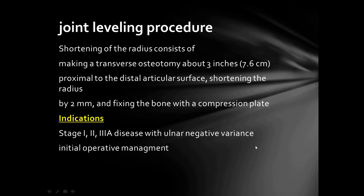The joint leveling procedure is done in ulnar negative variance. We can either do ulnar lengthening or radial shortening — it is better to do radial shortening. Radial shortening involves a transverse osteotomy about 3 inches proximal to the distal articular surface, shortening the radius by 2 mm, and fixing the bone with a compression plate. It is indicated in Stage 1, 2, and 3A disease with ulnar negative variance.